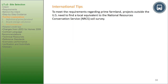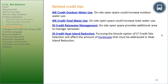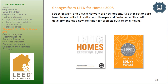International Tips: to meet prime farmland requirements, projects outside the U.S. need to find a local equivalent to the NRCS Soil Survey. Related Credit Tips: four related credits exist for Site Selection. WE Credit Outdoor Water Use and WE Credit Total Water Use — on-site open space could increase outdoor and total water use. SS Credit Rainwater Management — on-site open space provides additional area to manage rainwater. SS Credit Heat Island Reduction — pursuing the bicycle option of LT Credit Site Selection will affect the amount of hardscape addressed in Heat Island Reduction. Changes from LEED for Homes 2008: Street Network and Bicycle Network are new options; all other options are taken from credits in Location and Linkages and Sustainable Sites. In-field development has a new definition for projects outside small towns.